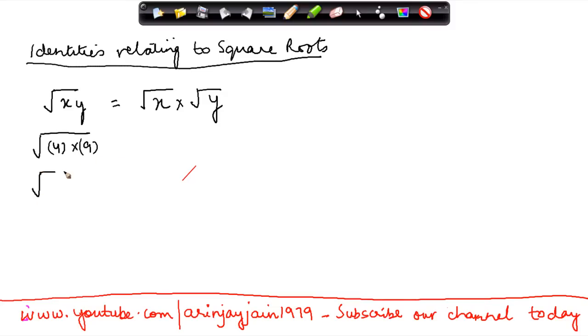Then I know that square root of 4 into 9 is equal to square root of 36. And we all know that the square root of 36 is equal to 6.